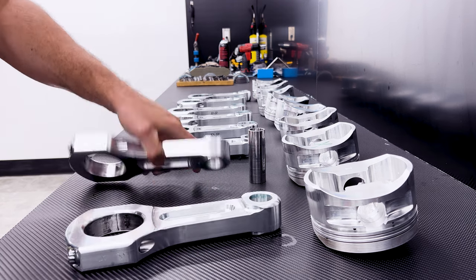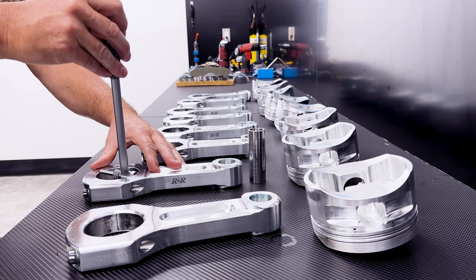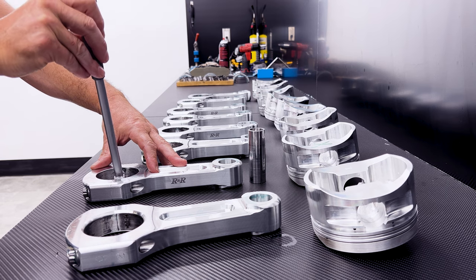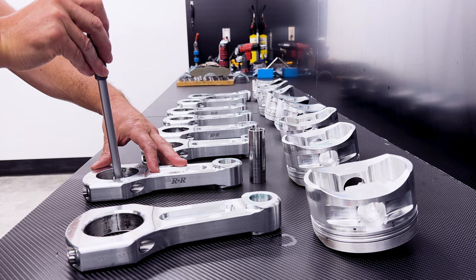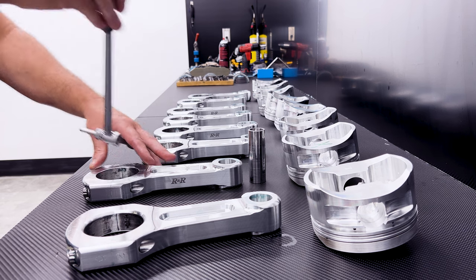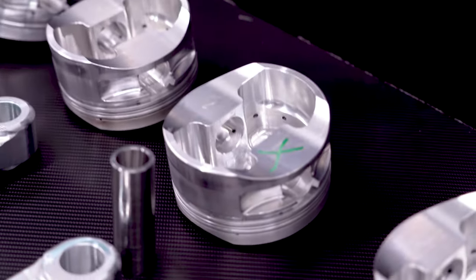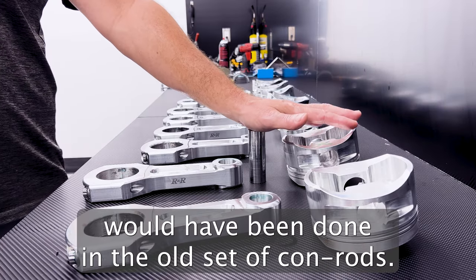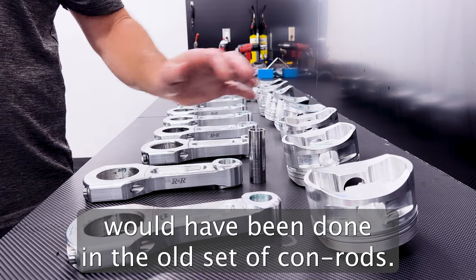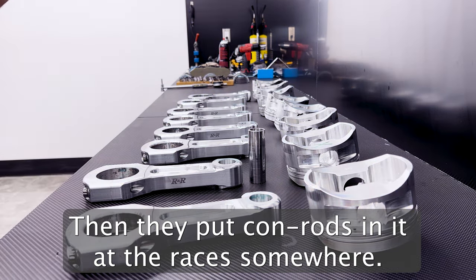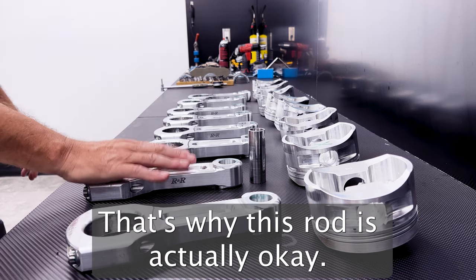We'll check the small end, come around, grab our bigger dial bore gauge and check the big end of the connecting rod. Normally there's not much to see there, but it's always worth checking all of them and making sure they're within spec. And from there we'll continue on to the wrist pins. But that tells me this damage would have been done in the old set of rods. Then they put new rods on it at the race or something. That's why this rod is actually okay.